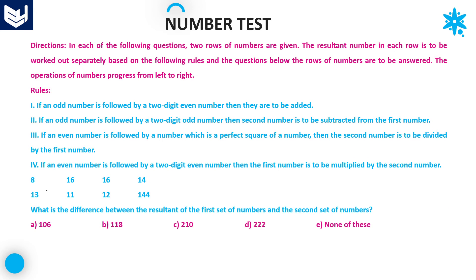Let's see the last question. 8 is an even number followed by 16, which is a perfect square. Rule 3: second divided by first — 16 divided by 8 equals 2. Next, 2 is even followed by 16, again a perfect square. Same rule: 16 divided by 2 equals 8.